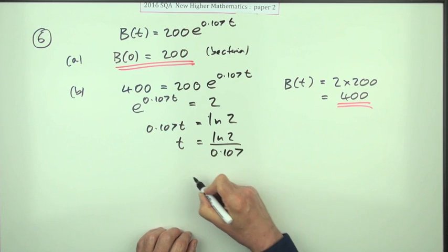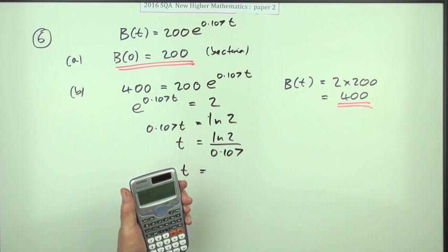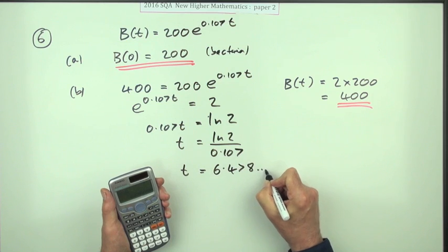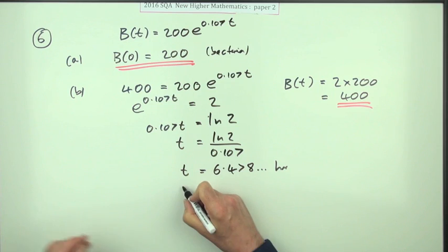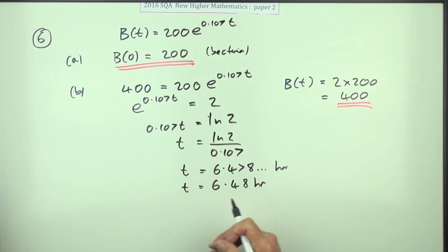Now let's just press the buttons and you get 6.478 and so on, and that's in hours. Just round it off: 6.48 hours.